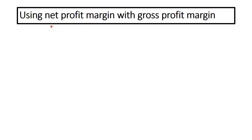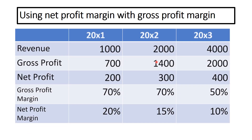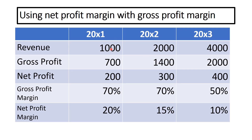It can be really good to use the net profit margin in collaboration with the gross profit margin. Looking at this table, we've got revenue going 1,000, 2,000, 4,000; gross profit going 700, 1,400, 2,000; and net profit of 200, 300, and 400. The gross profit margin, calculated by dividing gross profit by revenue times 100, gives us 70 — then it drops to around 70, before falling to 50. The net profit margin gives us 20, 15, and 10 — dropping off each year.